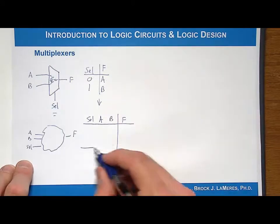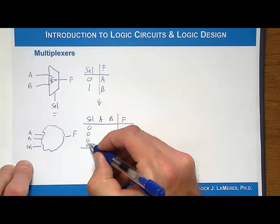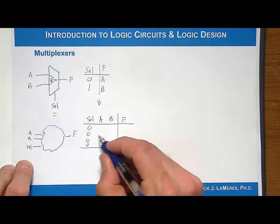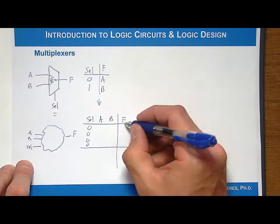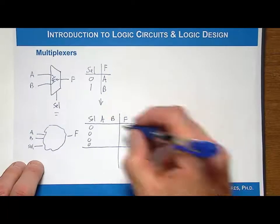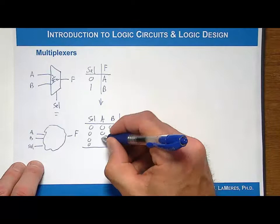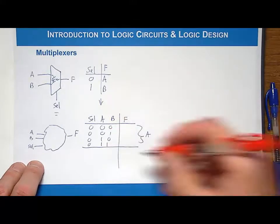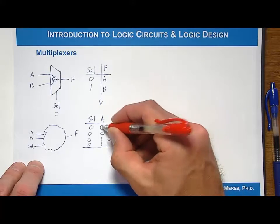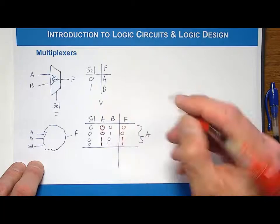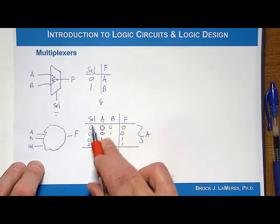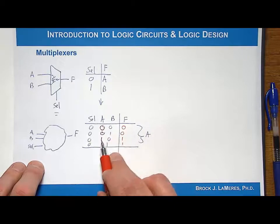Starting with select equal to 0, we enumerate all combinations of A and B: 00, 01, 10, 11. In this case, F is tracking A. So the outputs are 0, 0, 1, 1, which match whatever value A was. The circuit is essentially ignoring B, and when select is 0, it simply copies A.